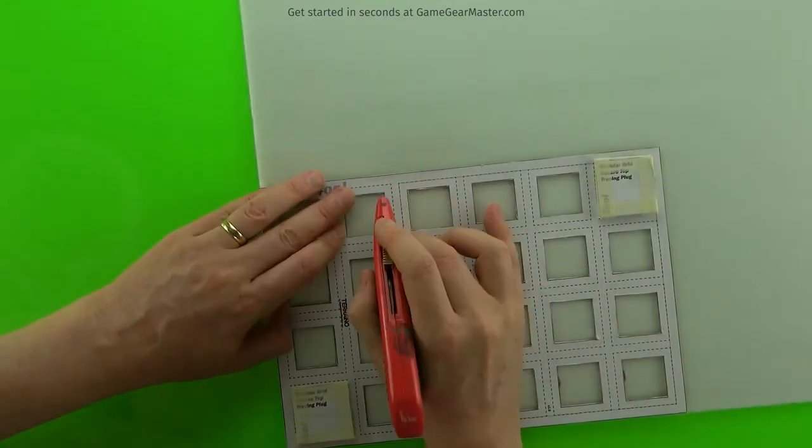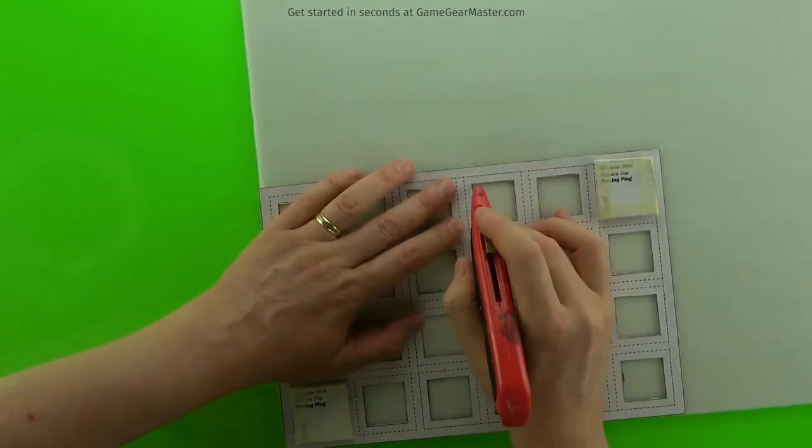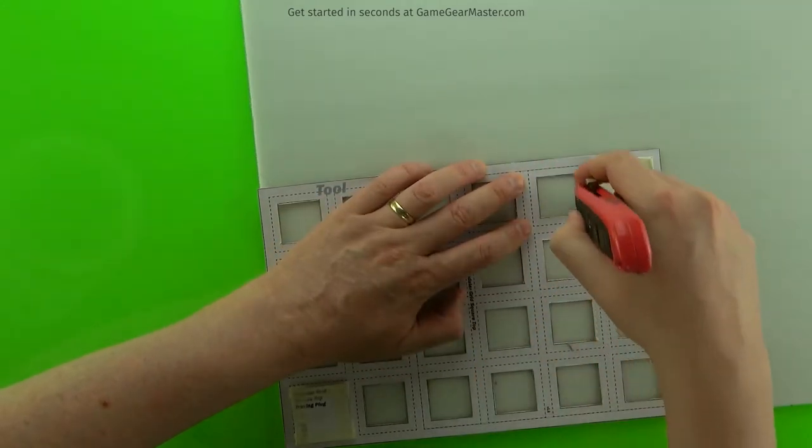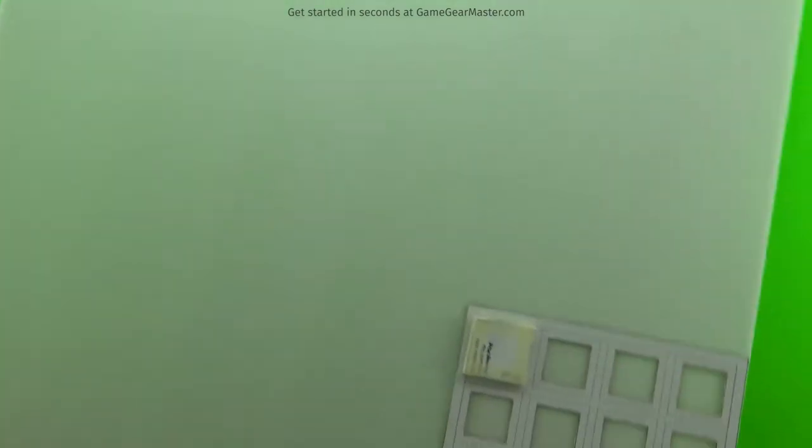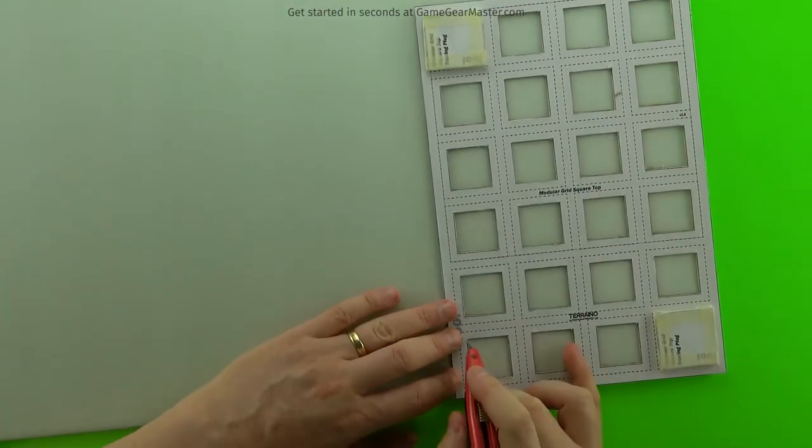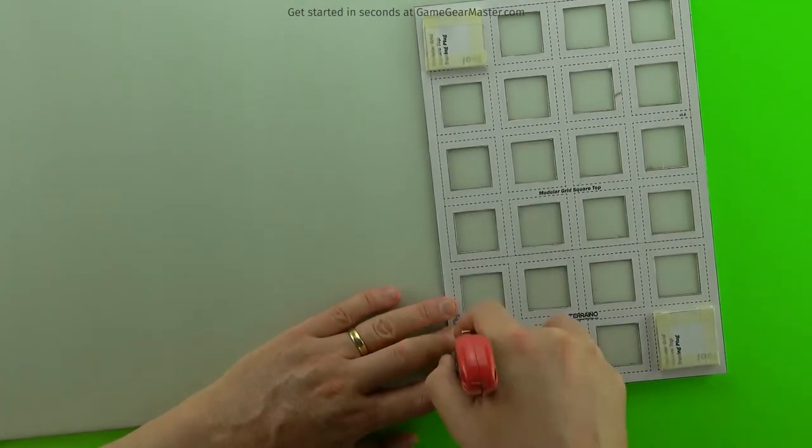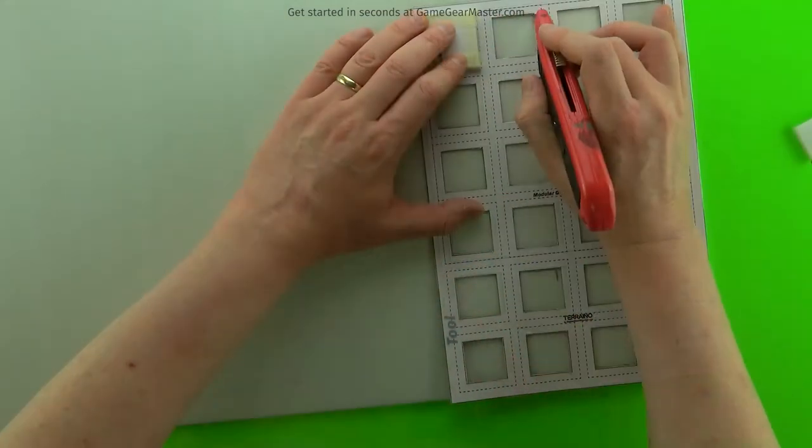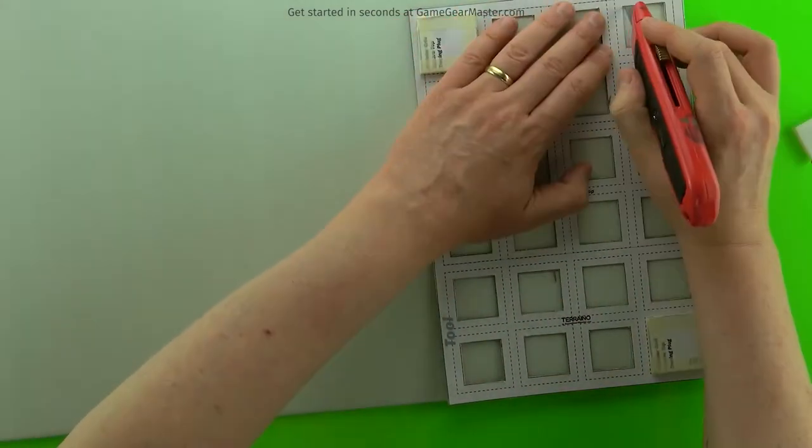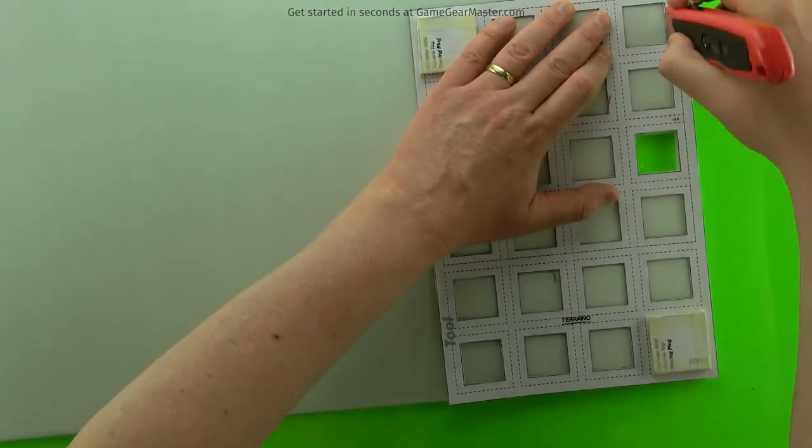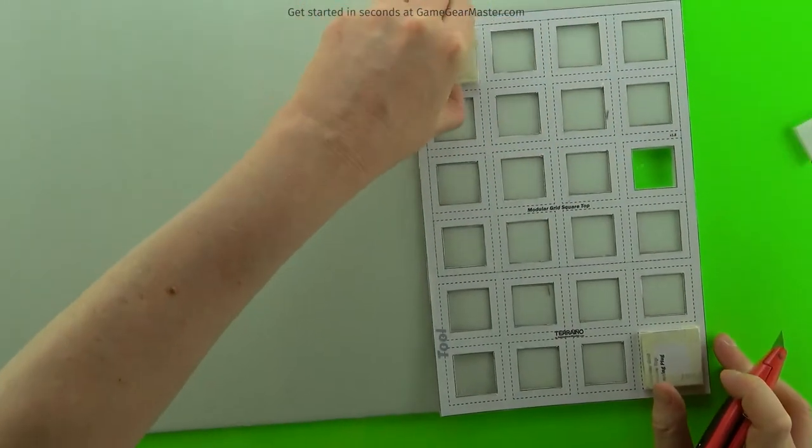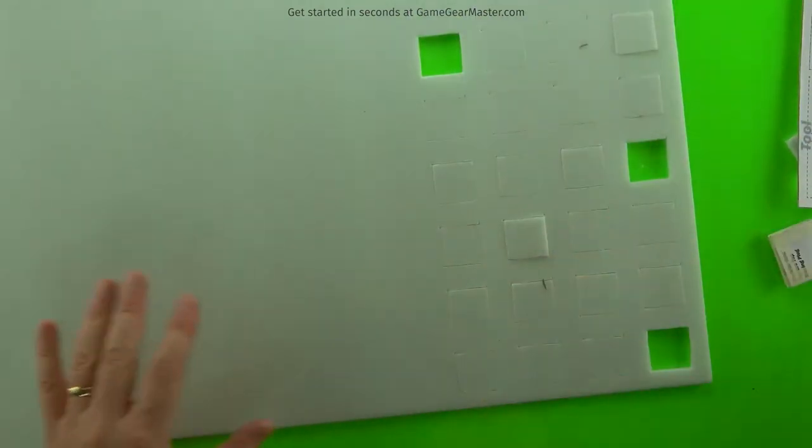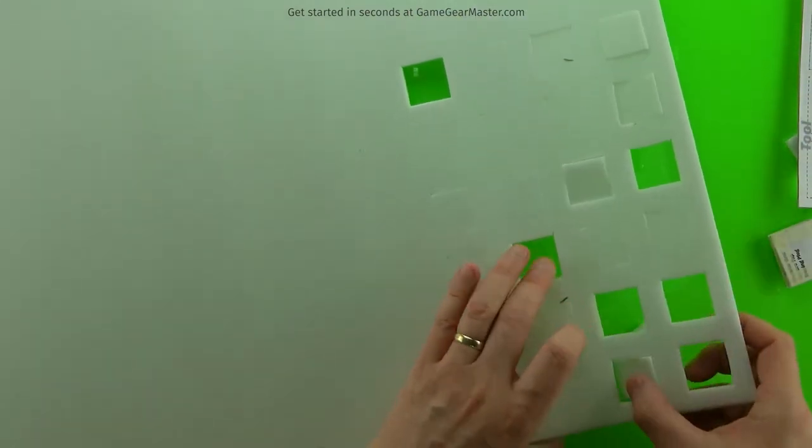You'll notice here I'm doing all the vertical cuts first, then I'll do all the horizontal cuts. That makes it a lot faster to do this. And then it's just on to the horizontal cuts. Once these are all cut out, just pop them out and get them out of the way.